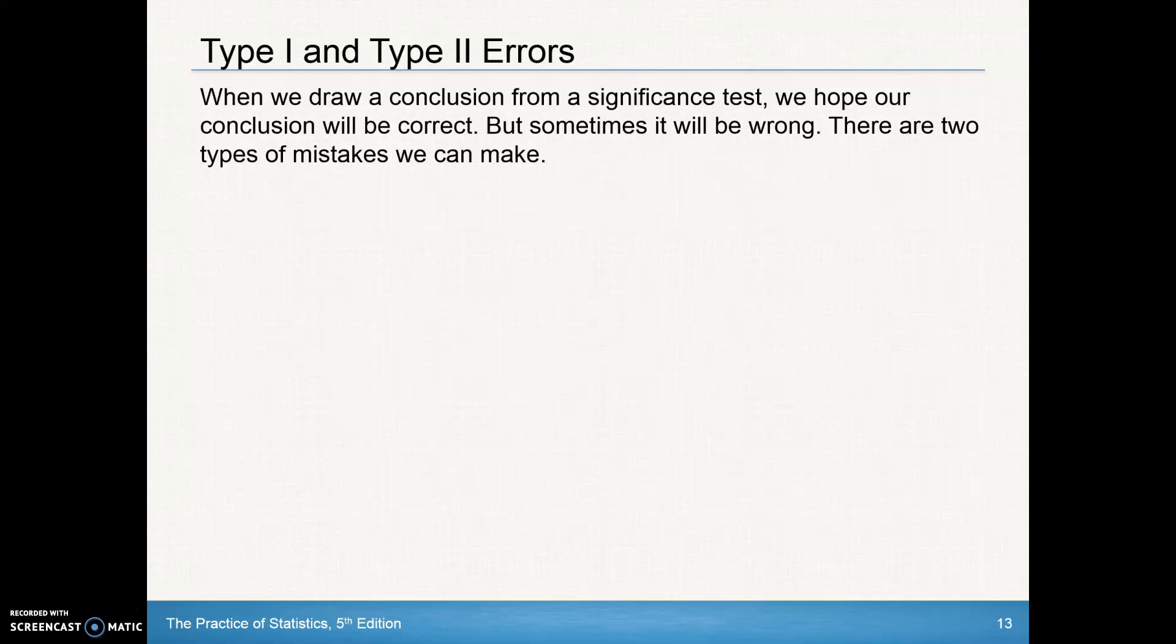When we draw a conclusion from a significance test, we hope our conclusion will be correct. In other words, when we say that we reject the null hypothesis, we hope we're right. Or when we say that we fail to reject the null hypothesis, we hope we are right. But sometimes it'll be wrong.